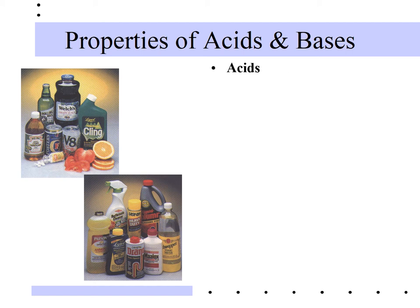These are sometimes called operational definitions because you could use them to identify an acid or base in practice, in a lab setting. Acids taste sour — things like lemon and orange juice. They feel initially like water if you get them on your hands. A dilute acid doesn't immediately start burning, but a more concentrated acid will start to feel like it's burning.